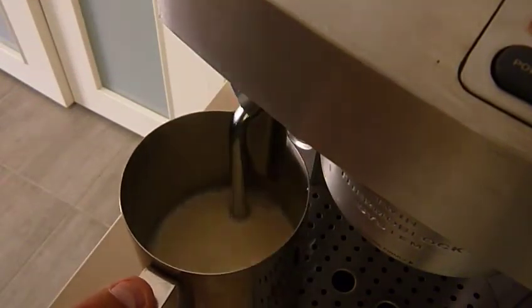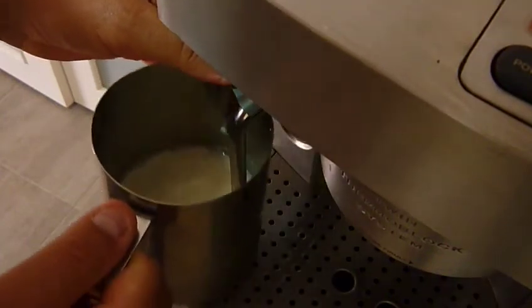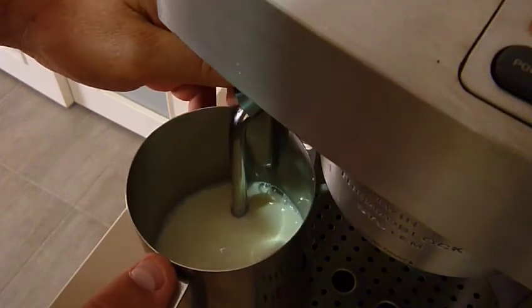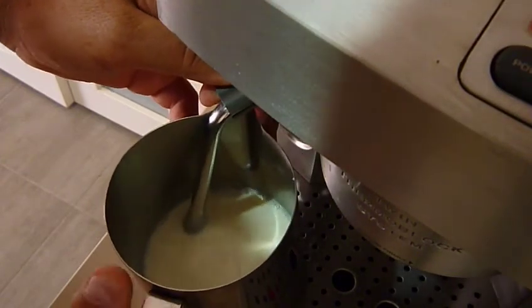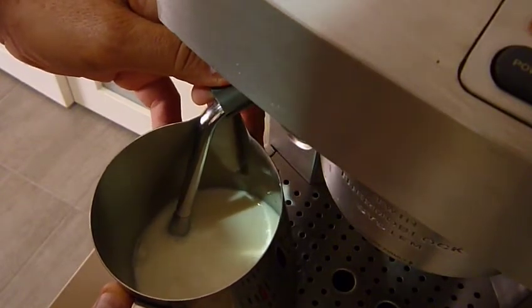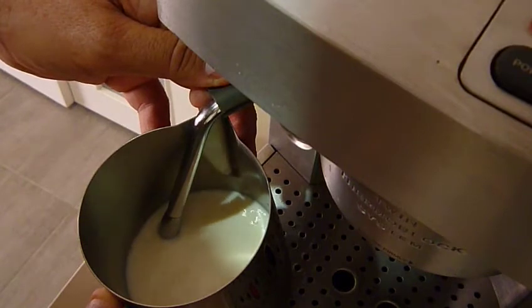Turn your steam on. Just warm your milk up a bit. Get the wand off to the side and just get it so the milk is starting to swirl.